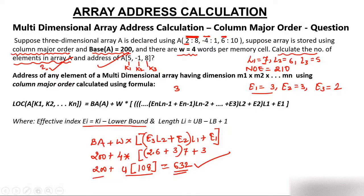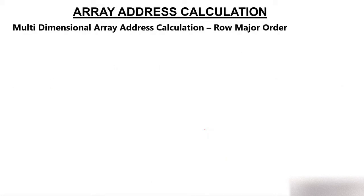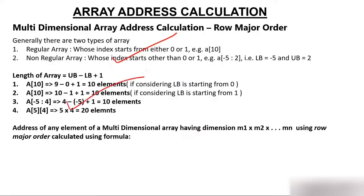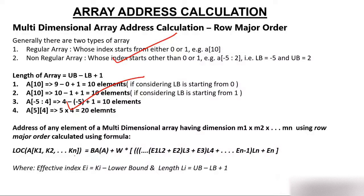So the column major order answer is 632. The formula pattern is easy to remember: start with En, multiply one-less, add same, multiply one-less, add same, and keep going. Now for row major order, everything remains the same with a slight change: instead of starting with En in decreasing order, you start with E1 in increasing order — E1 × L2, then add E2 × L3, and so on up to En.